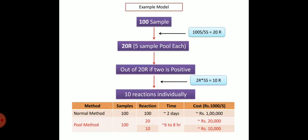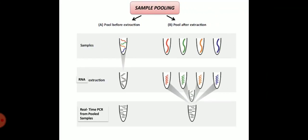With the pool method: first 20 reactions, taking only 6 to 8 hours, costing only 20,000 rupees. The follow-up individual testing (depending on how many pools were positive) might add 5 or 10 reactions, costing around 10,000 rupees more — totaling about 30,000 rupees. In this example you are saving 70,000 rupees and significant time compared to individual testing.